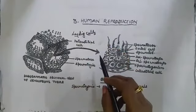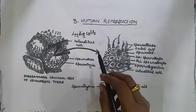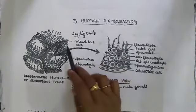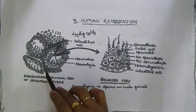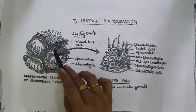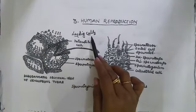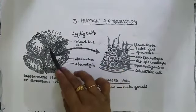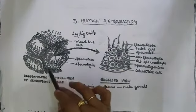Leydig cells are named in the honour of German anatomist F.W. Leydig, who discovered these interstitial cells located inside the interstitial spaces. The interstitial space also contains blood vessels.